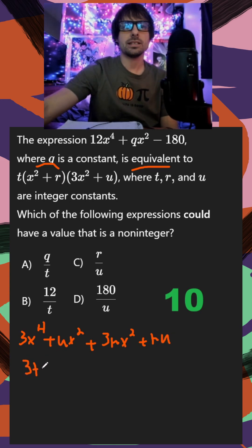So 3t x to the fourth, plus ut x squared, plus 3rt x squared, and finally plus rut.